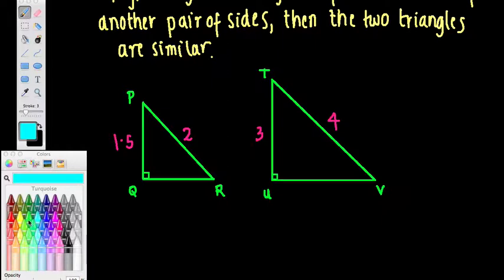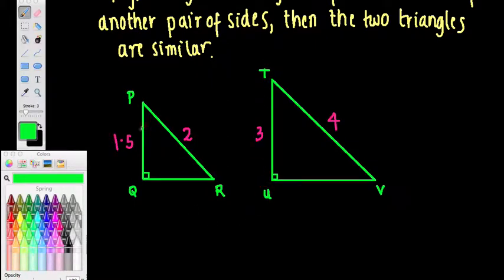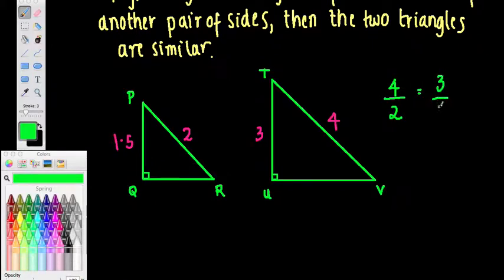Looking at the diagram, I can see two right-angled triangles, so the RHS test may apply. The two hypotenuses are 4 and 2, and another pair of sides is 3 and 1.5. Let's check: 4 over 2, and 3 over 1.5. Is 4/2 equal to 3/1.5? Yes — both equal 2. So the RHS rule is satisfied.